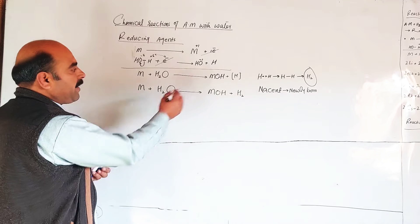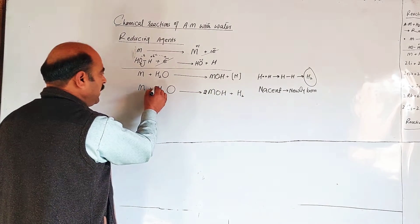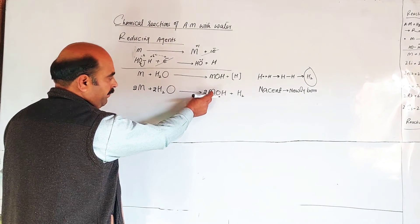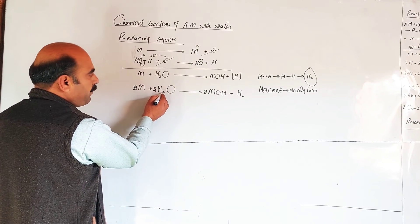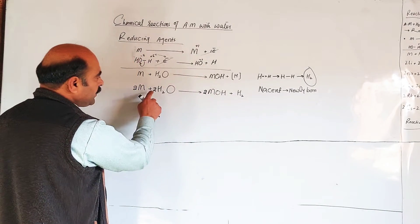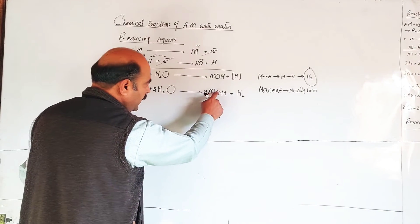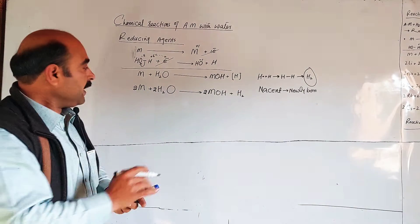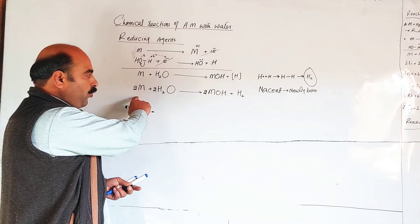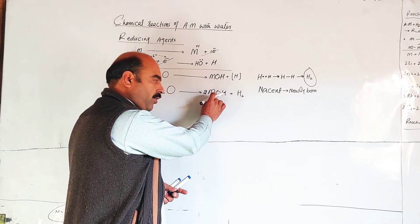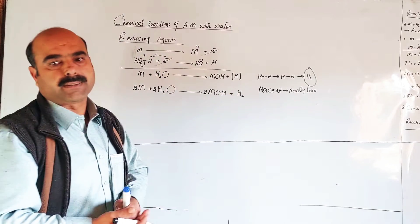To balance the equation: two moles of metal, two of water, gives two moles of metal hydroxide and one mole of hydrogen gas. Alkali metal when reacts with water forms metal hydroxide and hydrogen gas is released.